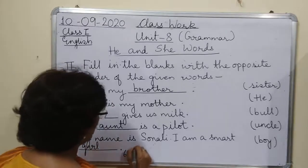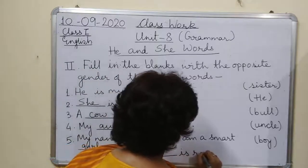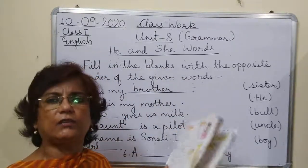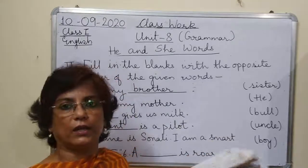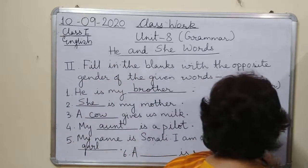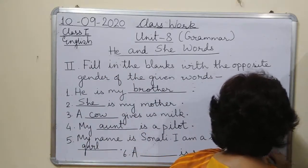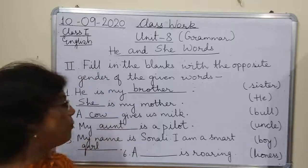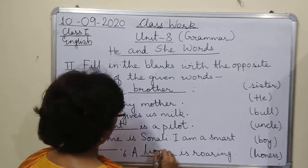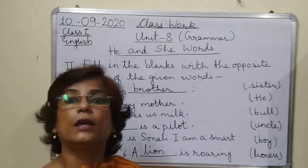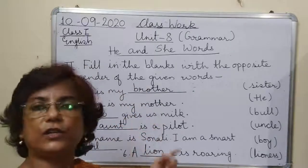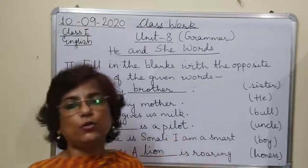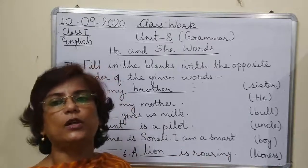And sixth is: A ___ is roaring (lioness). You have to fill in the blank with the opposite gender. What is the opposite gender of lioness? The opposite gender of lioness is lion. So: A lion is roaring. I hope children these he words and she words aap ko samajh mein aaye hain. He words are the words used for male genders, and she words are the words used for female genders.